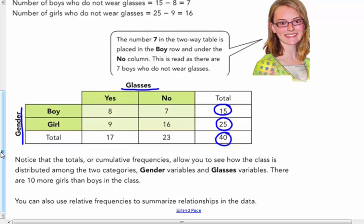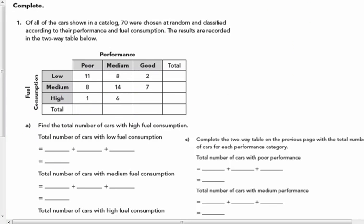There are 10 more girls than boys in the class. You can also use relative frequencies to summarize relationships in the data. We are now in your notes on page 29.